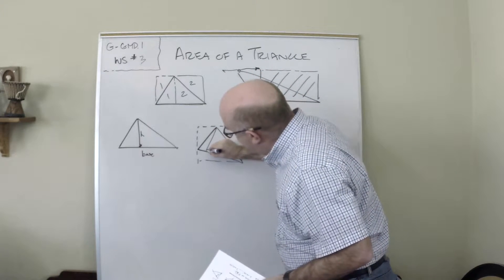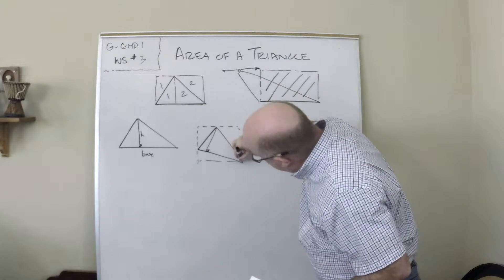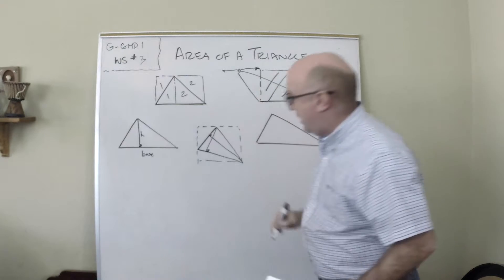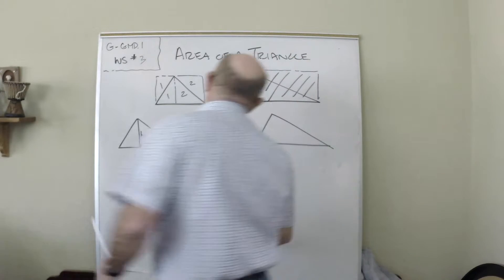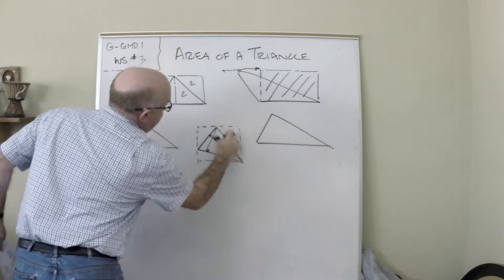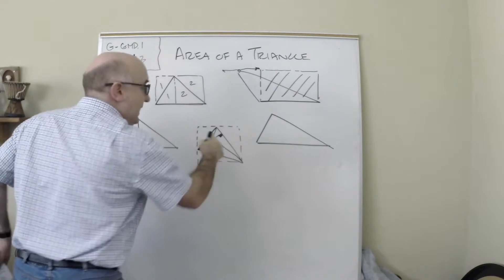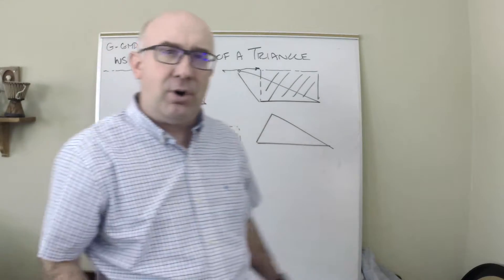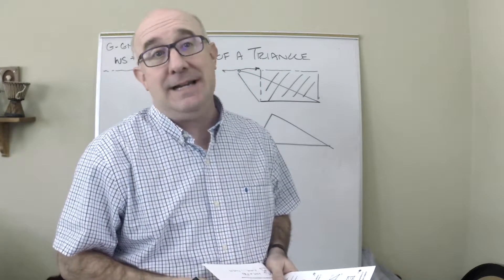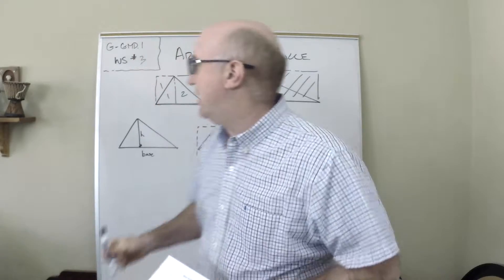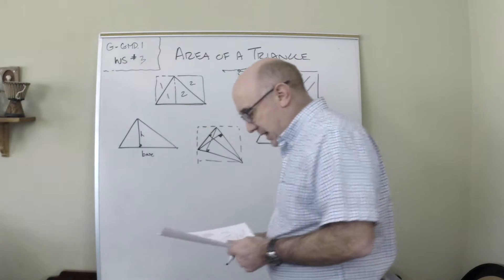You could use this as your base, and your height would be somewhere over here as well. Do you see that base and that height? And then it would also be true that you could use this as a base and this as a height as well. So in any given triangle, there are three distinct bases and its accompanying height, and sometimes we get caught up in only thinking about it this way.